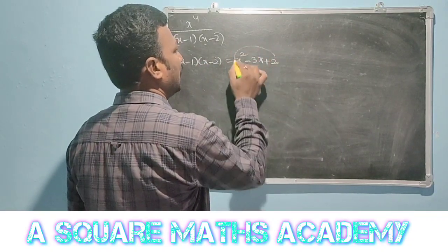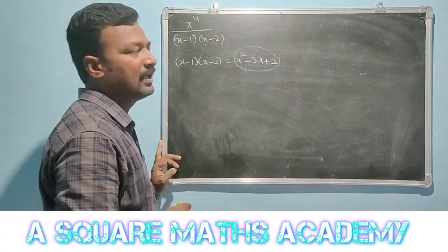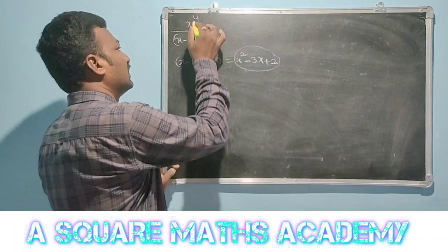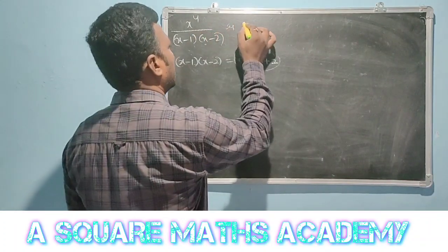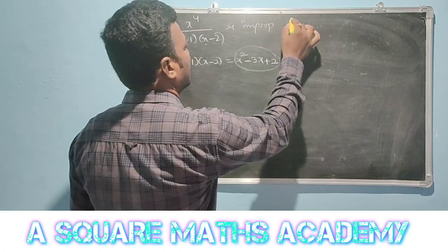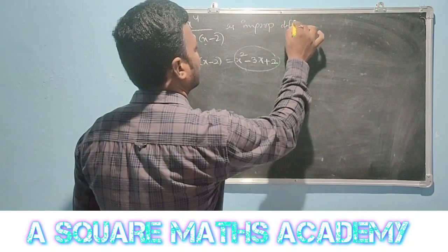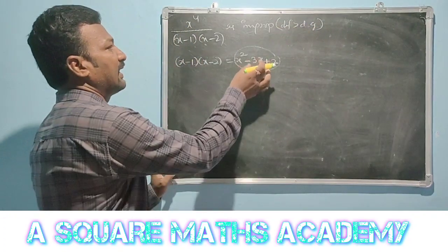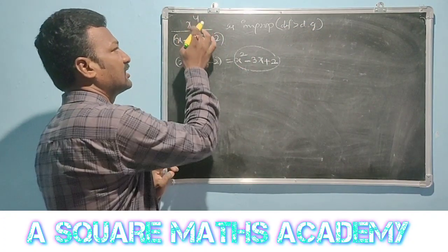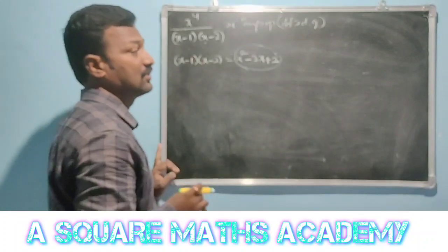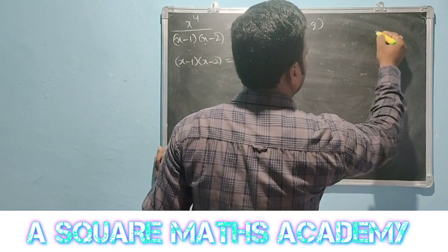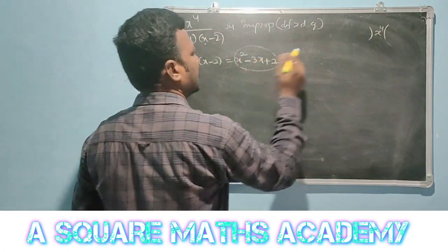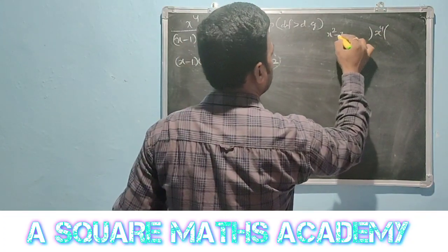We have a quadratic factor: minus 3x plus 2. Now x to the power 4 is an improper fraction because the degree of f(x) is greater than the degree of g(x). So f(x) divided by g(x) must be divided out, where f(x) is x to the power 4 and g(x) is x squared minus 3x plus 2.